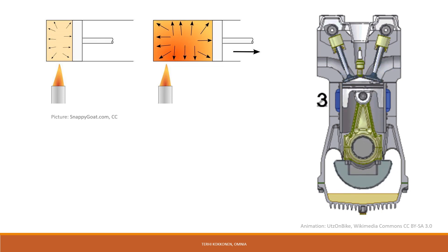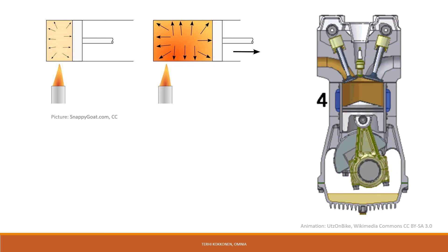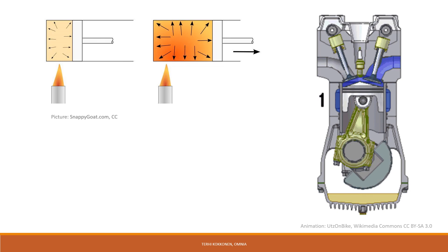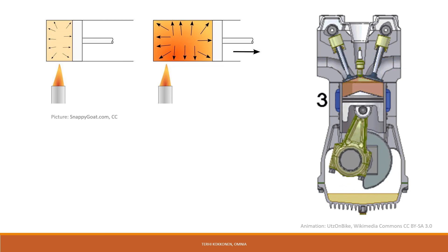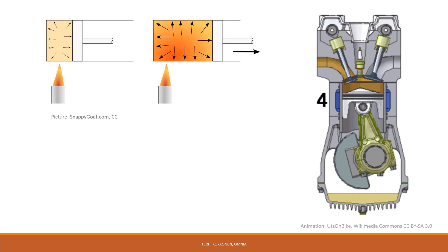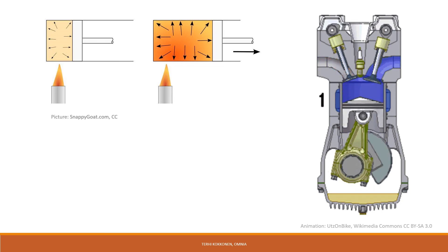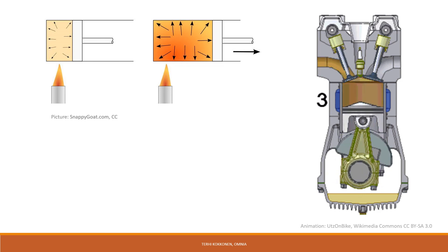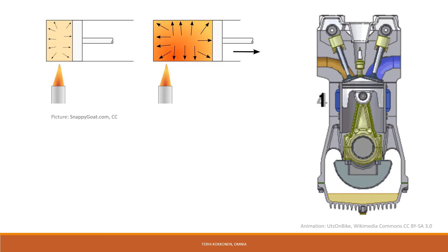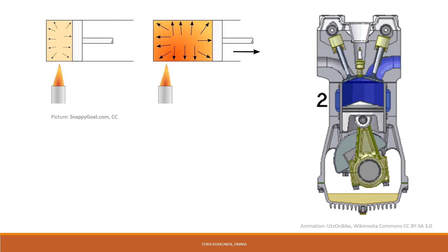So when a gas is compressed, work needs to be done. Work flows into the system. On the other hand, expanding gas can do work on the surroundings. Expansion work is the work done when a system expands against an opposing pressure. This is a common type of work associated with chemical processes.